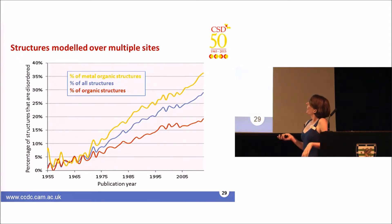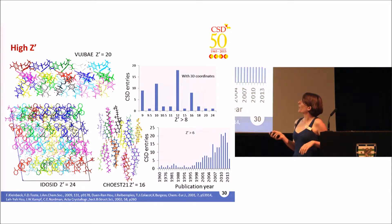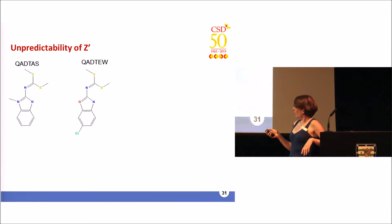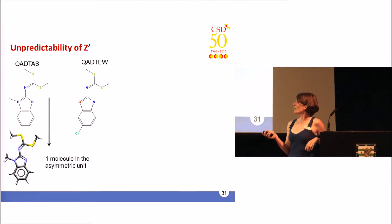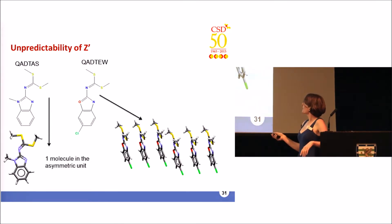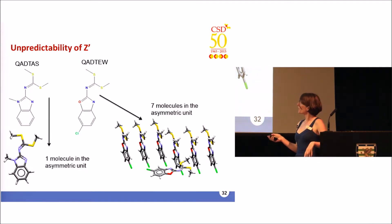There are still things that are hard to predict despite the wealth of data in the CSD, such as the number of independent molecules in a structure. To highlight this: one molecule in the database has one independent molecule in the asymmetric unit, so you might guess its counterpart also has one — but when you look in the CSD it actually has six stacking molecules and a seventh perpendicular molecule, giving seven molecules in the asymmetric unit. There's still a way to go before we can reliably predict structures.